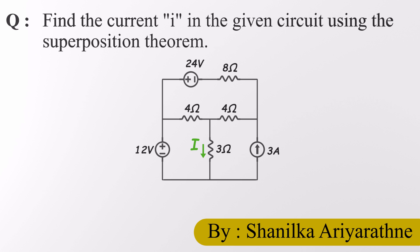Let's find the current I that flows through this 3-ohm resistor using the superposition theorem. Now if you're thinking, wait, multiple sources, this looks messy, don't worry.